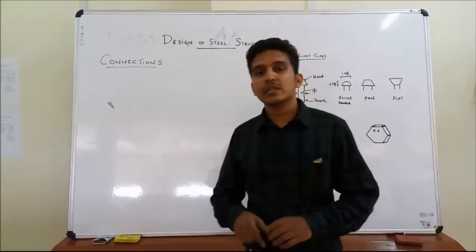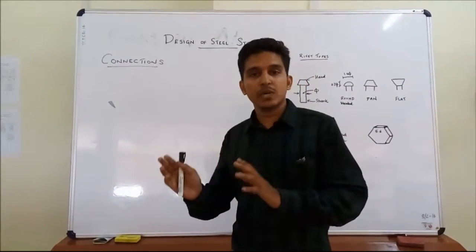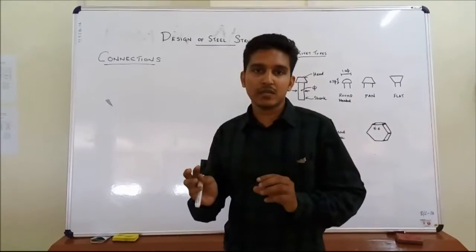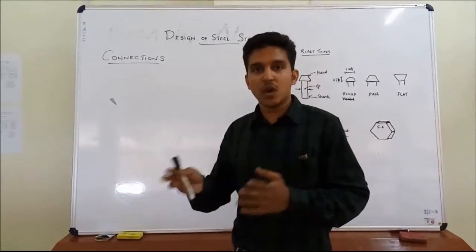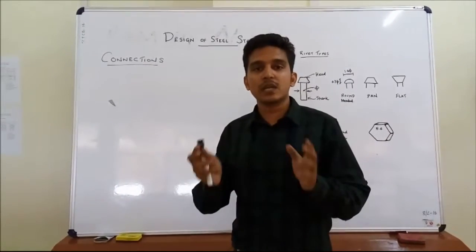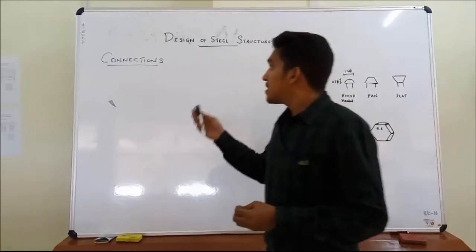Connections, as you all know, are structural fasteners. They are used to connect different members or structural parts together. A steel structure is an assemblage of different parts such as beams, columns, etc. They are connected together by certain fasteners or structural elements. These are known as connections.